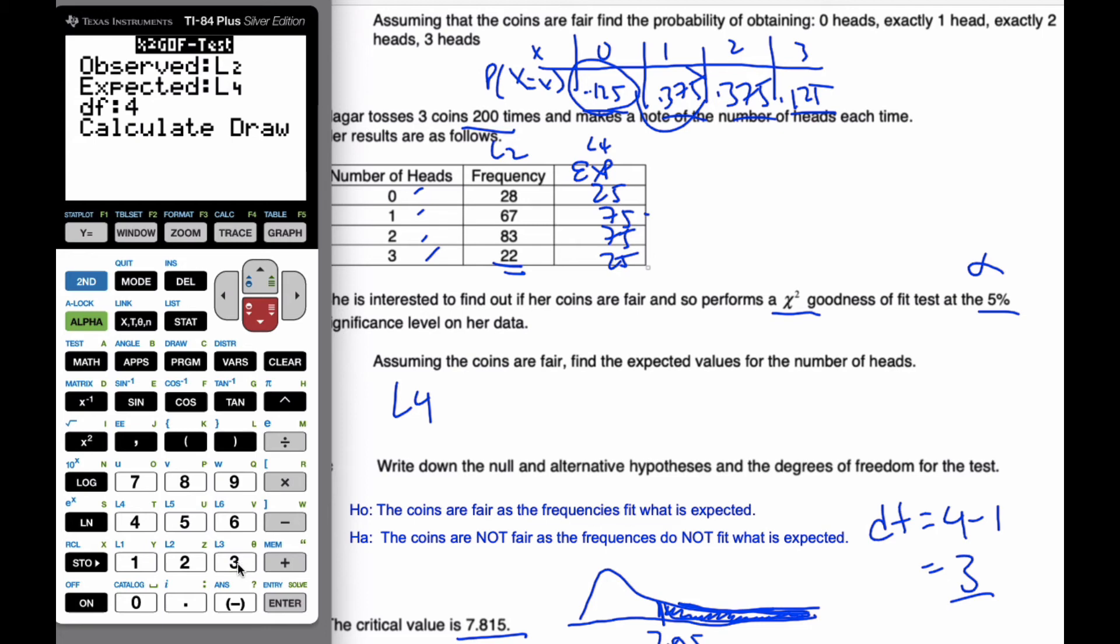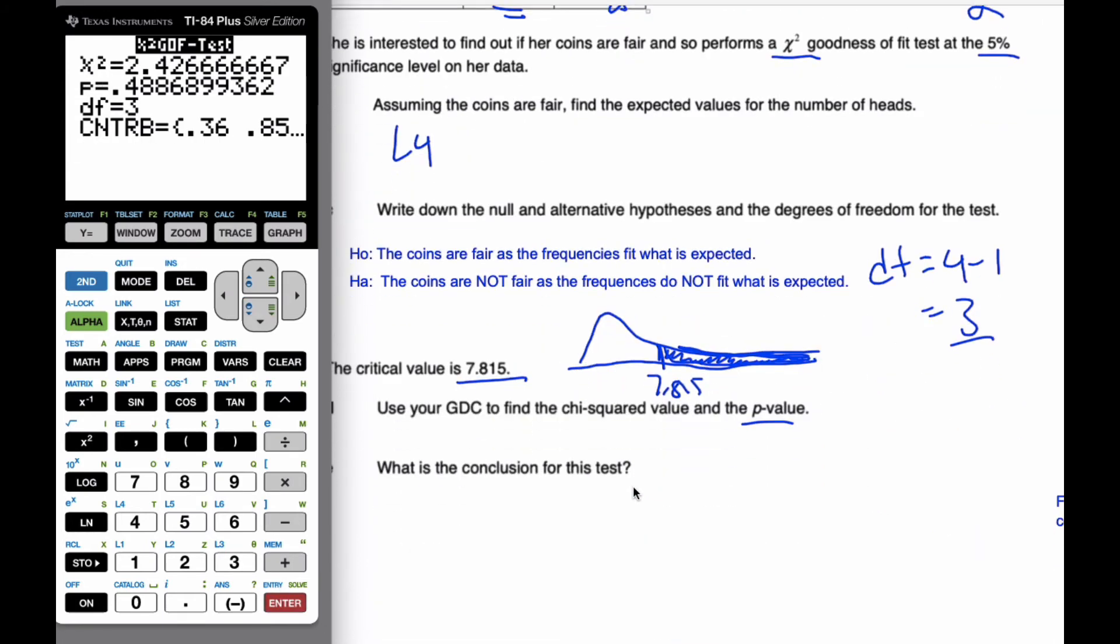Conveniently as shown. My degrees of freedom are three. And so, I'm going to calculate my degrees of freedom. And I see a couple of things. I see that my p-value equals 0.489, and my chi-squared value is equal to 2.43.